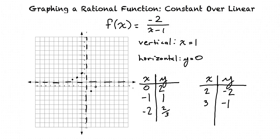And when x equals 4, we get that y equals negative 2 thirds. 4 comma negative 2 thirds.